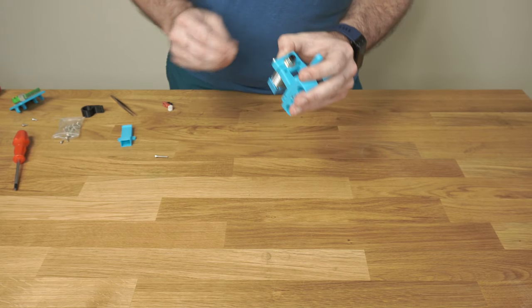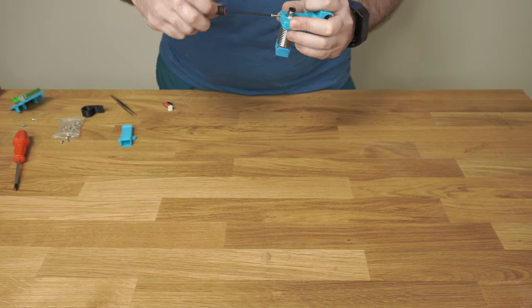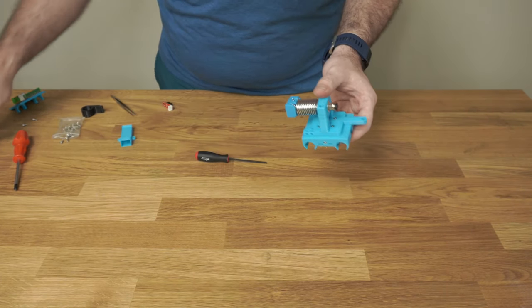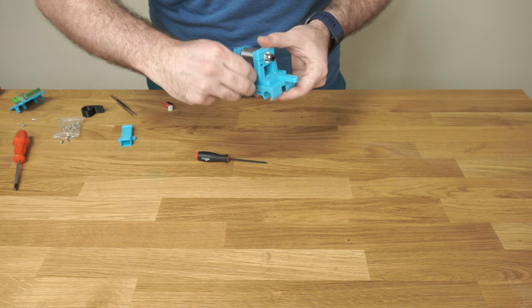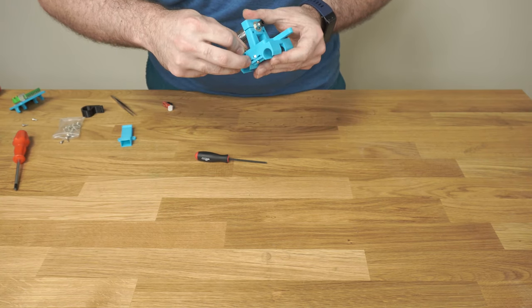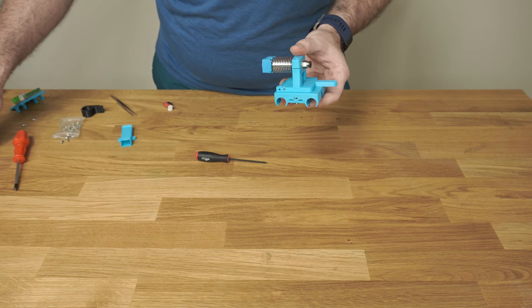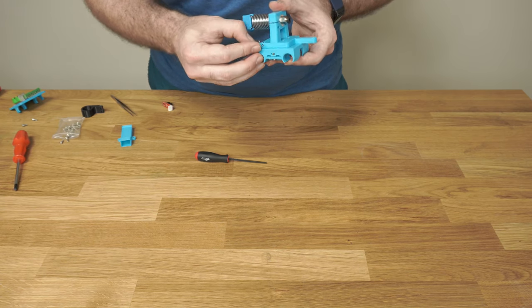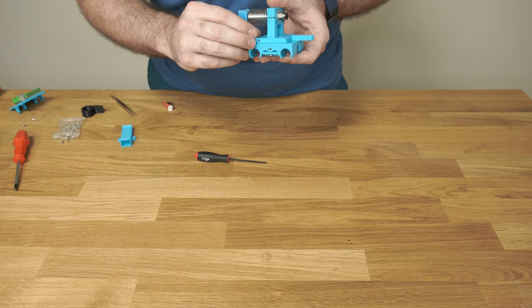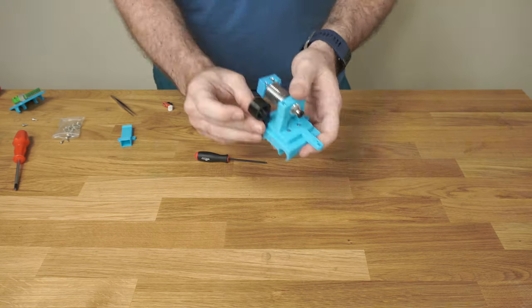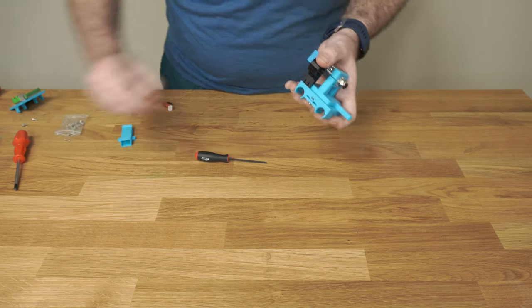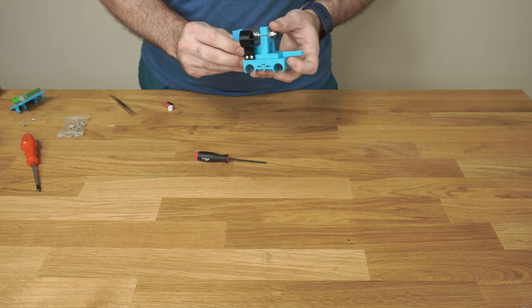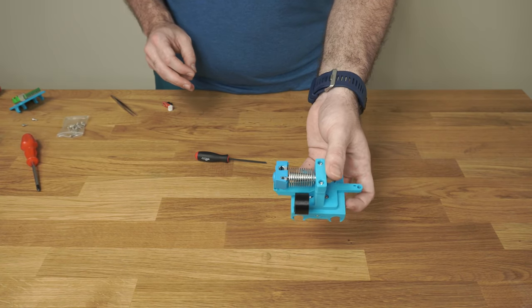Then we're going to mount two more nuts in here—this is your sensor mount. Whether you have an induction probe that comes stock in the kit, or like a BLTouch, I've got a file for a BLTouch on Prusa Printers. You can use either one, with two more M3 by 10.